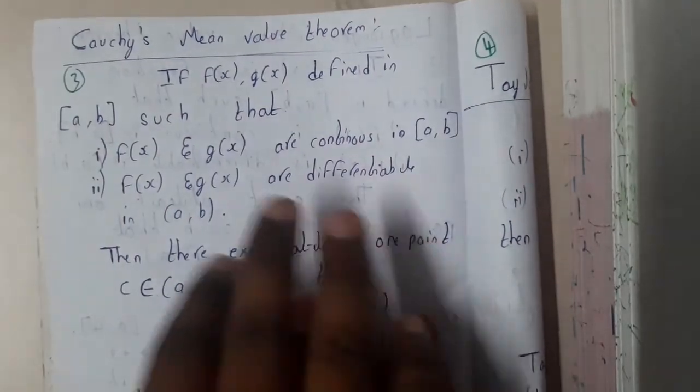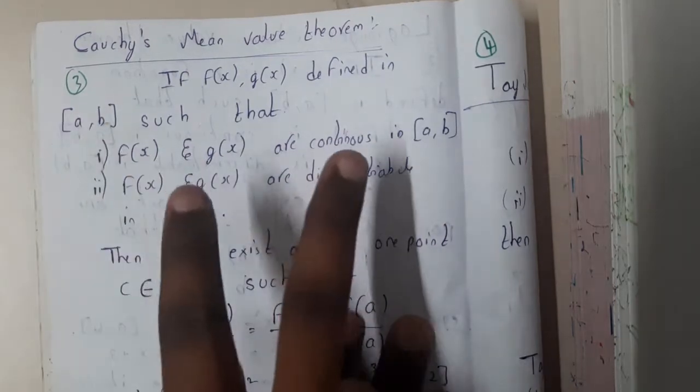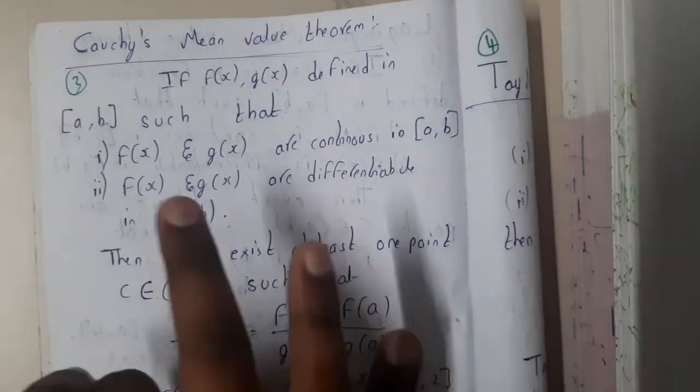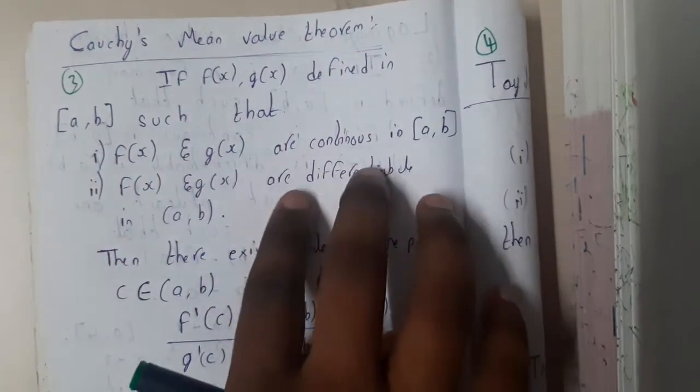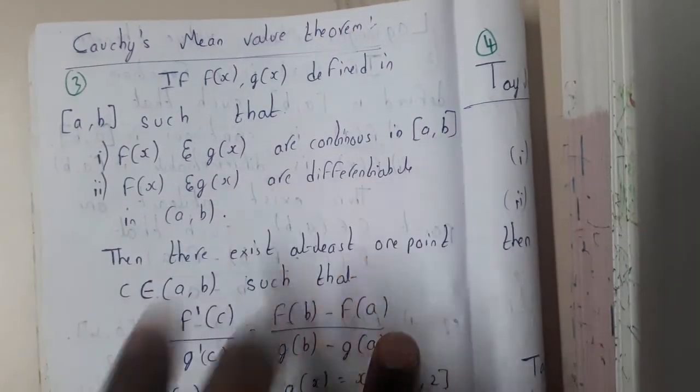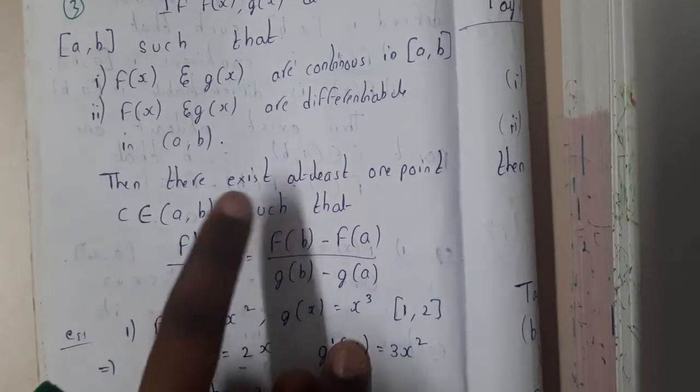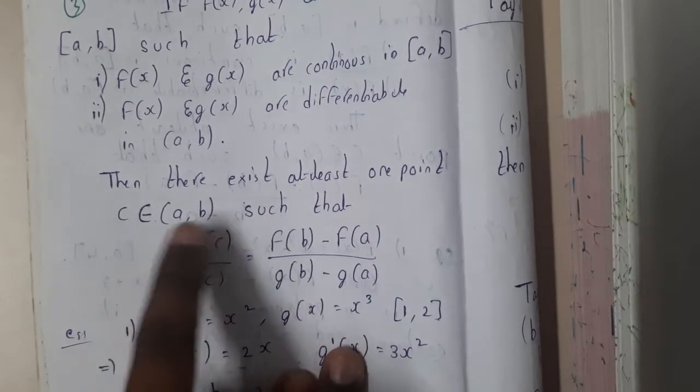So here we are having two different functions, f of x and g of x. Both of them should be continuous, and both of them should be differentiable.